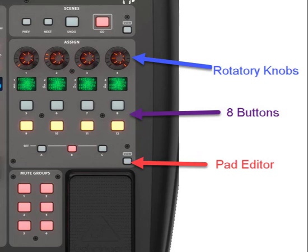In this video, we're going to talk about setting up the X32 — the assign button section — because the assign button section has to be programmed in order for my template to work. This is the only part of the programming that you need to do. We're going to program this inside of your Behringer X32, your Compact, or your Producer.